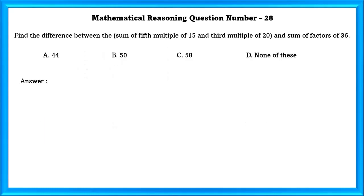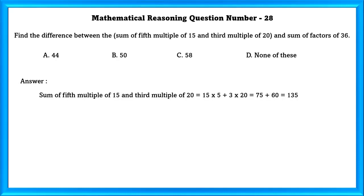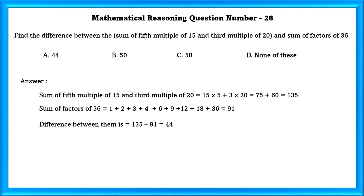Mathematical reasoning question number 28: Find the difference between the sum of the fifth multiple of 15 and third multiple of 20, and the sum of factors of 36. The sum of the fifth multiple of 15 and third multiple of 20 is 135. The sum of factors of 36 is 91. The difference between them is 44.